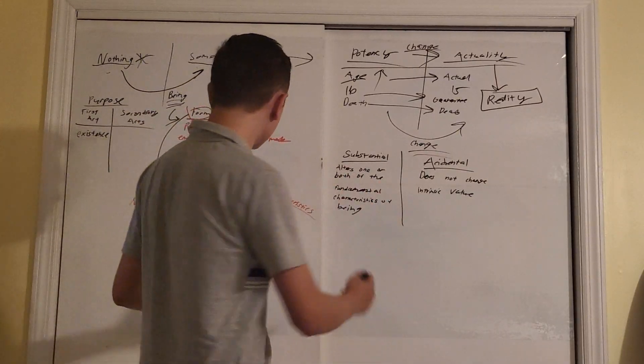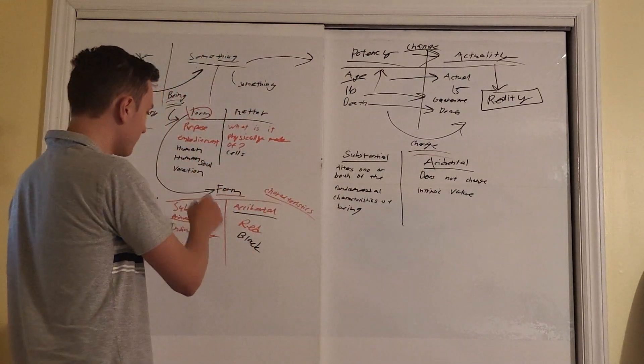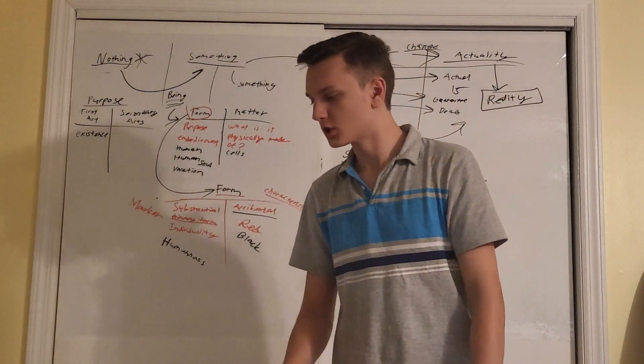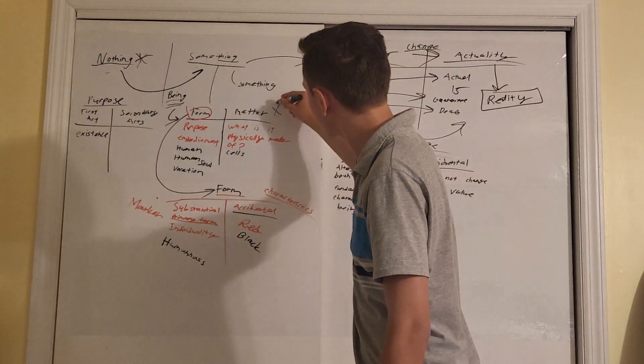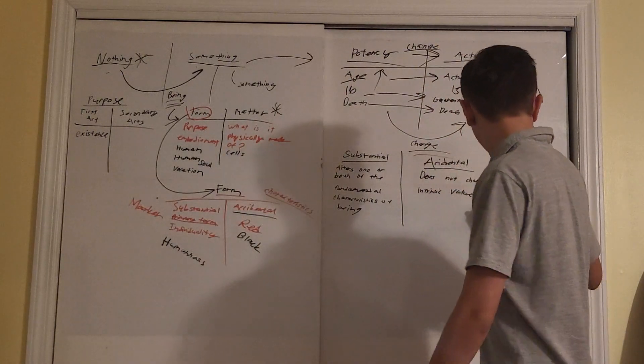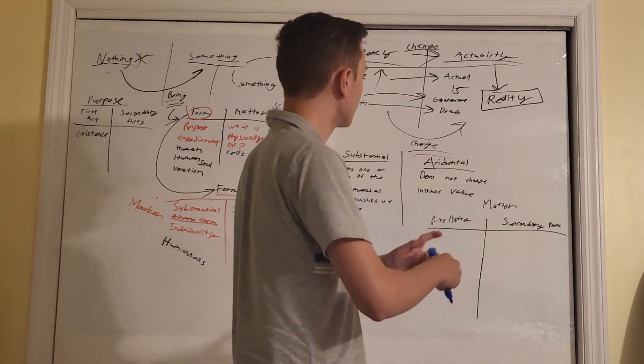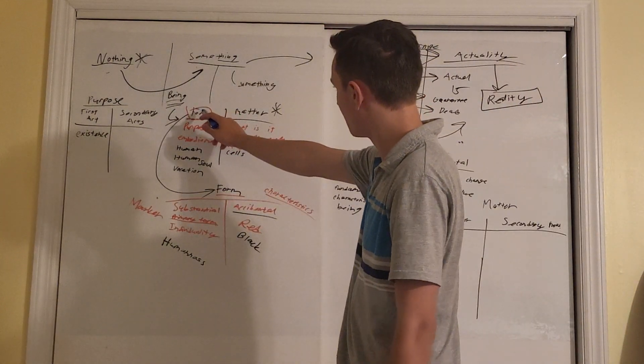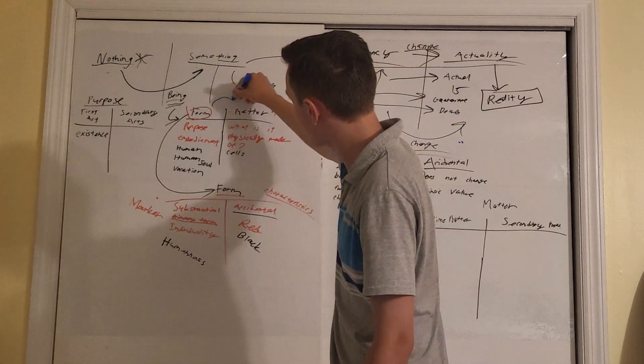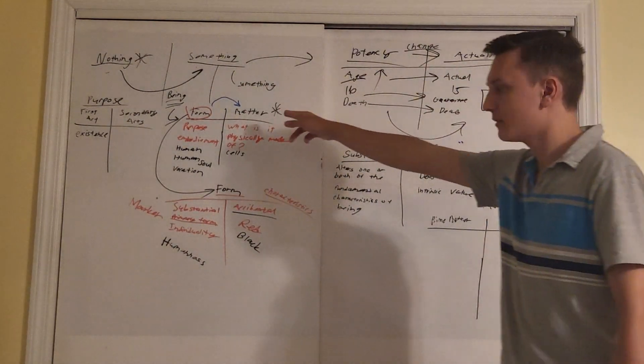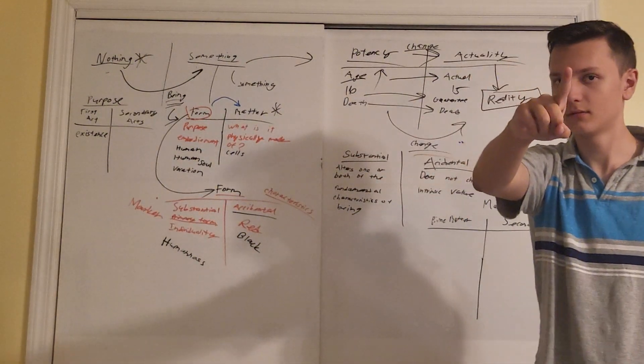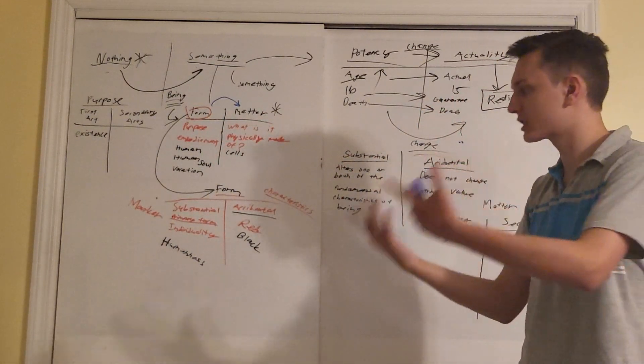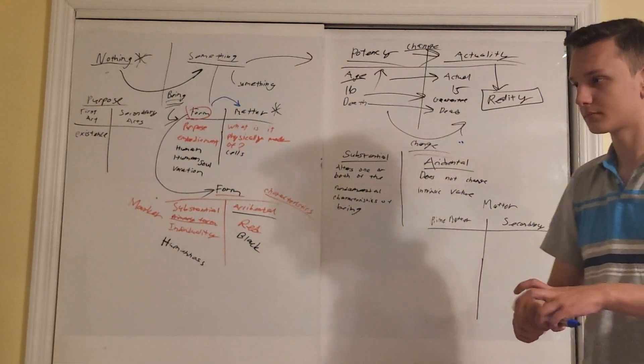Now, let's unite some of the two principles we've been talking about. We've got substantial and accidental form. We've got substantial and accidental change. So let's bring matter into the mix. Well, matter hasn't been shown enough love yet. Let's talk about matter over here. We've got prime matter and we've got secondary matter. So we talked about how form actualizes matter.